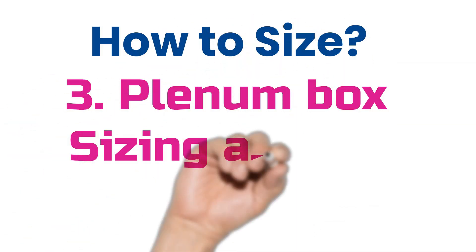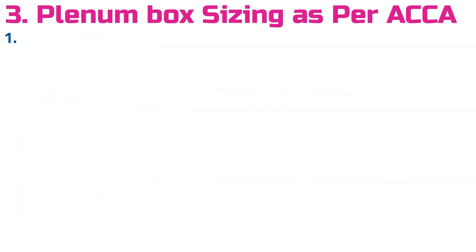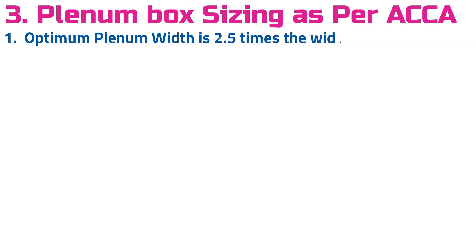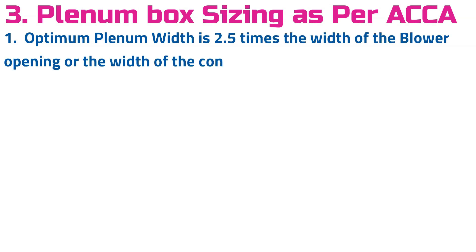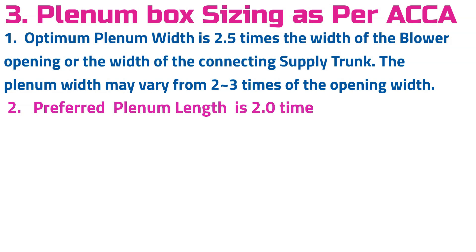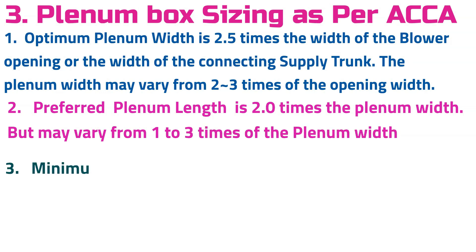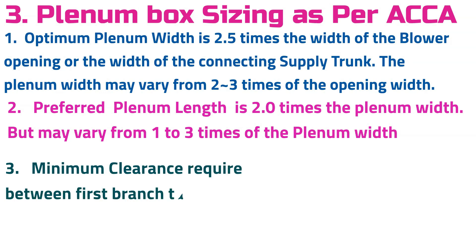Plenum box sizing as per ACCA Manual D standard: 1) The optimum plenum width is 2.5 times the width of the blower opening or the width of the connecting supply trunk; the plenum width may vary from 2 to 3 times the opening width. 2) The preferred plenum length is 2.0 times the plenum width, but may vary from 1 to 3 times the plenum width. 3) Minimum clearance is required between the first branch take-off and the entrance to the plenum box.